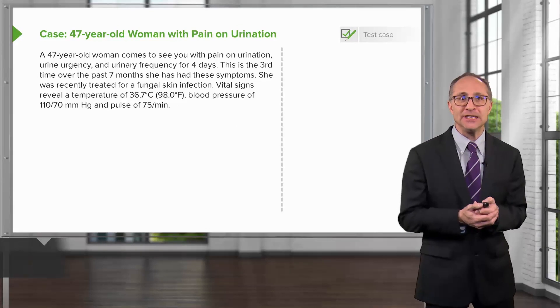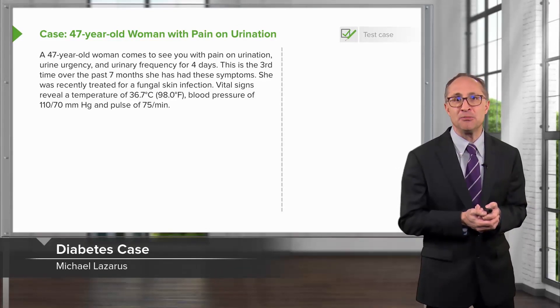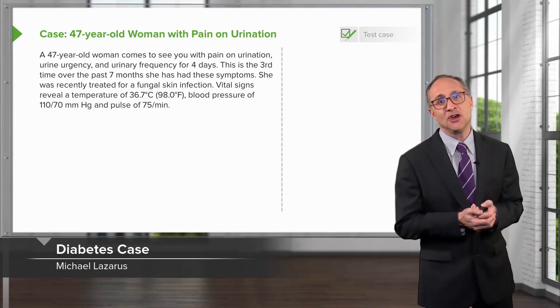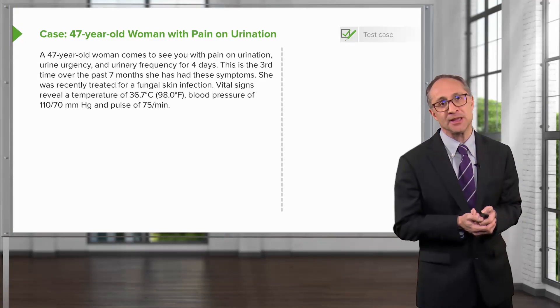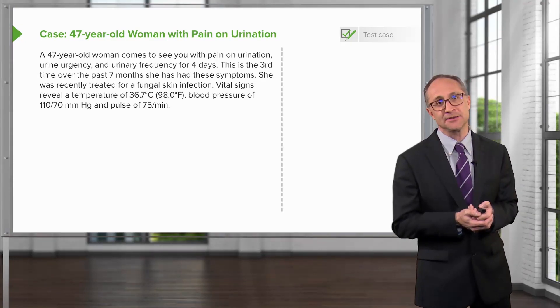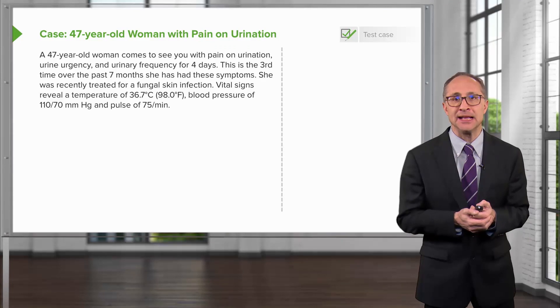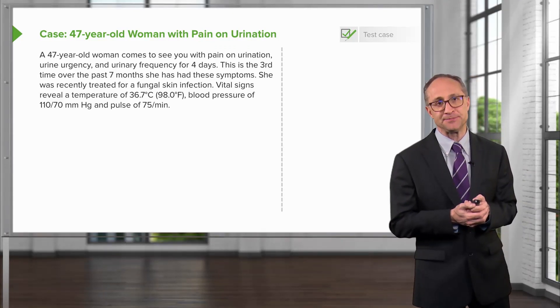In this case, a 47-year-old woman comes to see you with pain on urination, urine urgency, and urinary frequency for four days. It is the third time over the past seven months that she has had these symptoms.